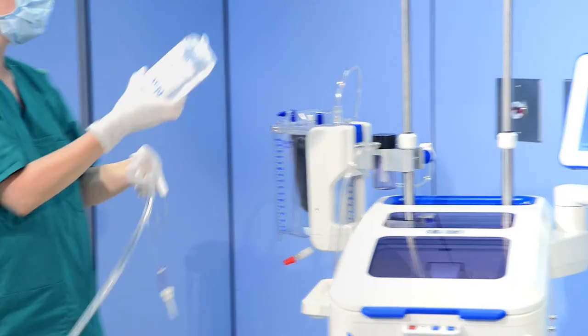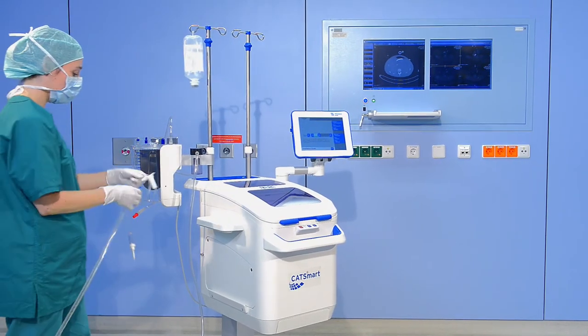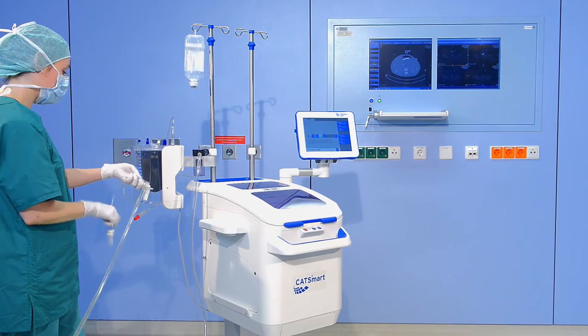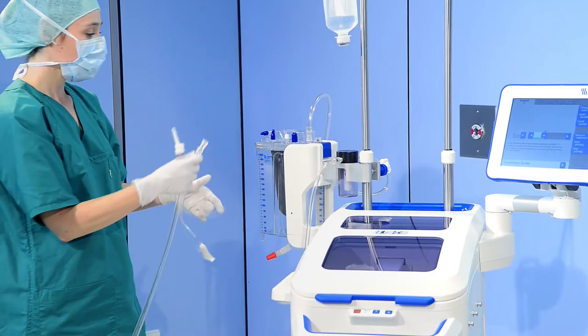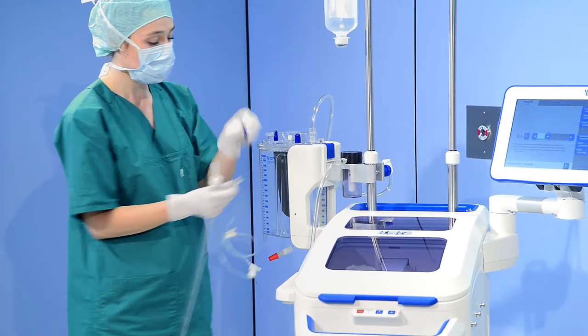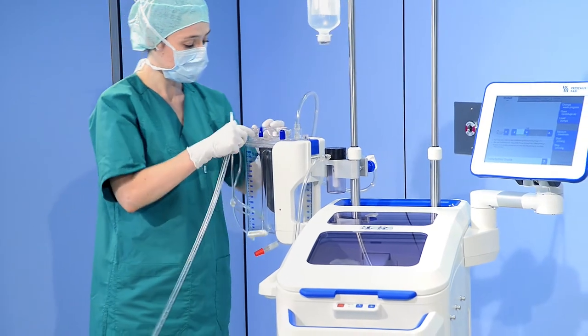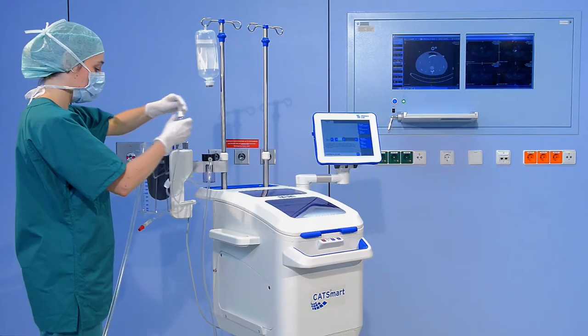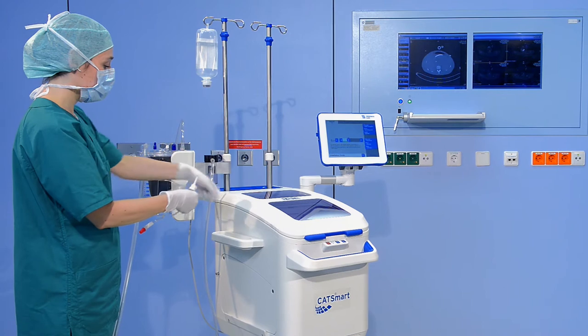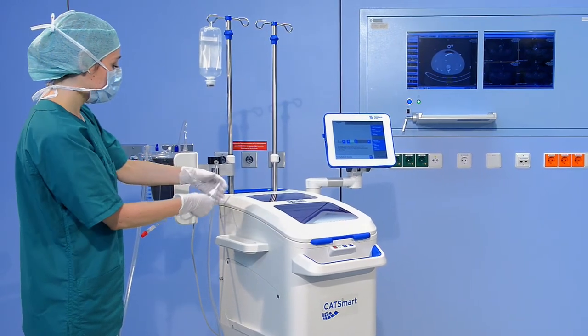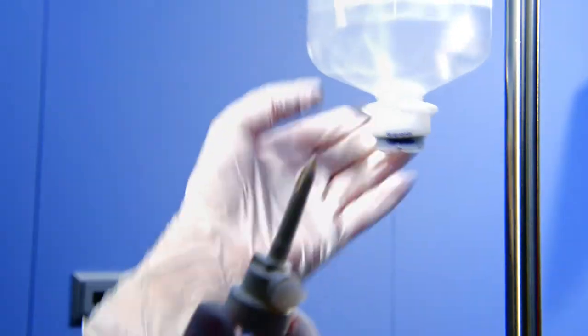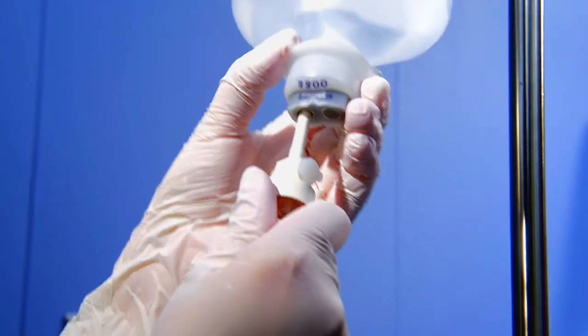Prepare 30,000 units heparin per 1 liter of isotonic saline solution. Connect the adapter to one of the reservoir ports, blue cap. Connect the drip chamber to anticoagulant solution bag using the spike.